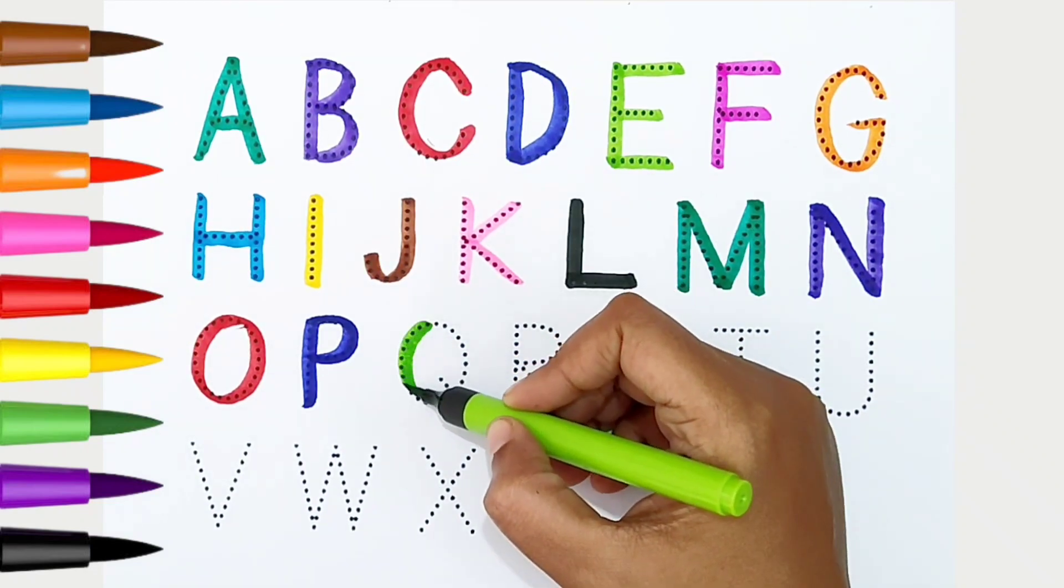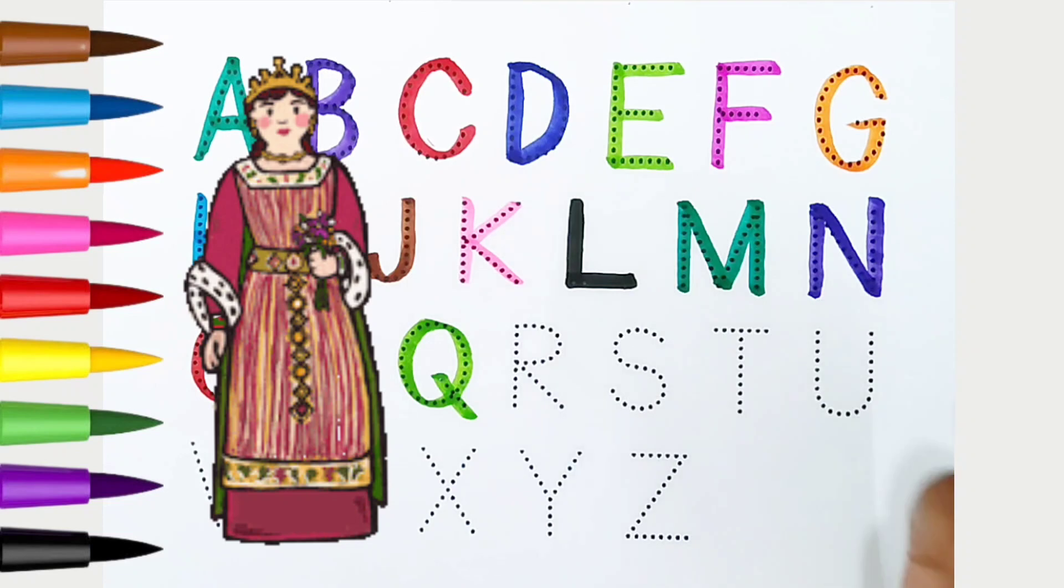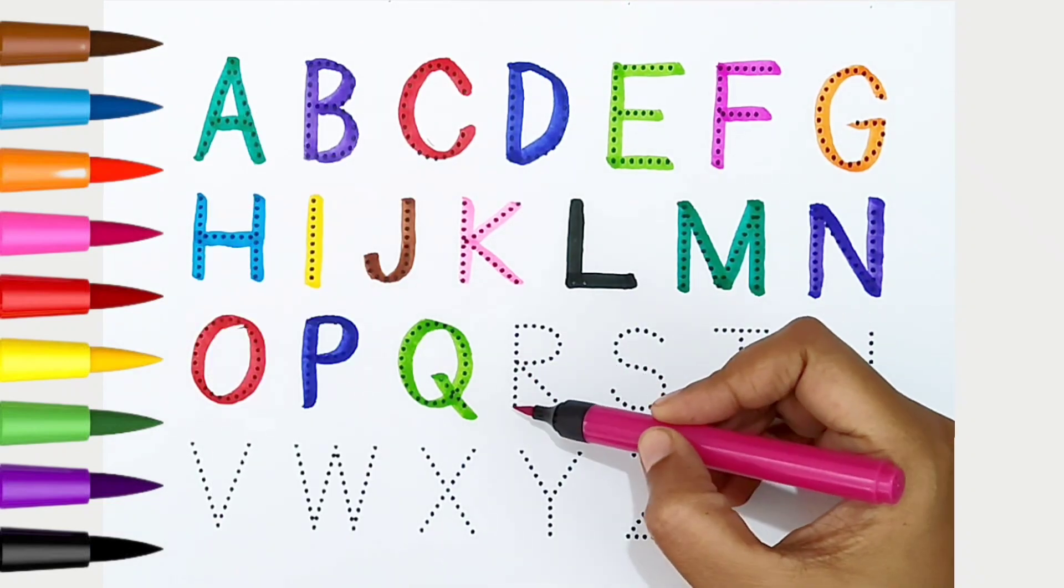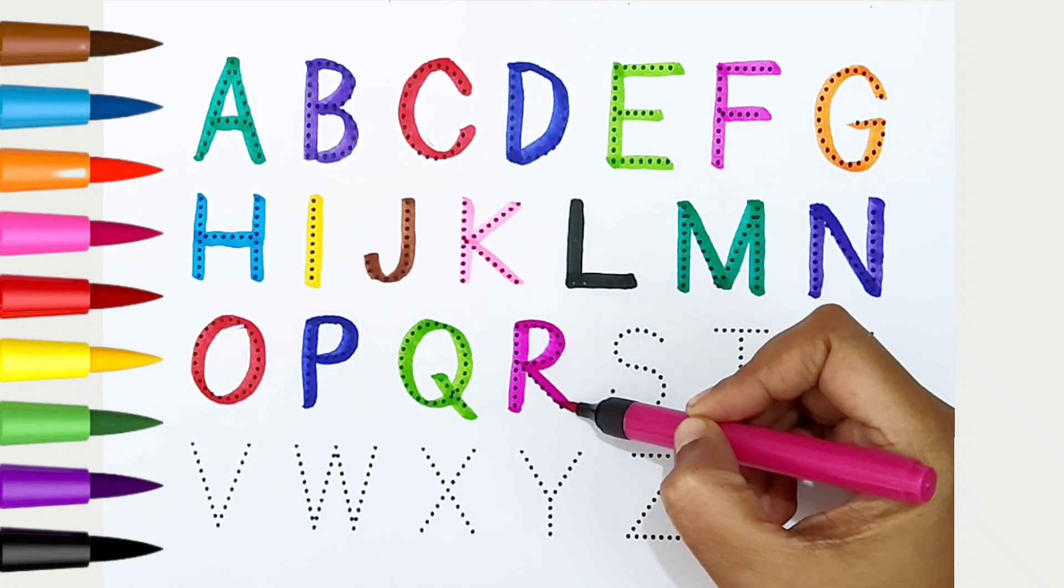Q, light green color. Q is for queen. R, dark pink color. R is for rose.